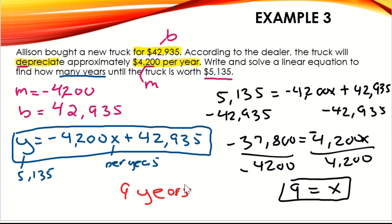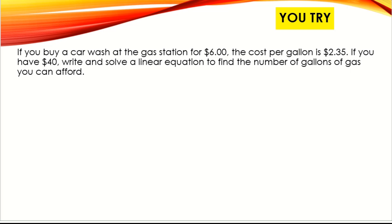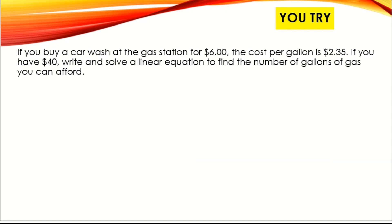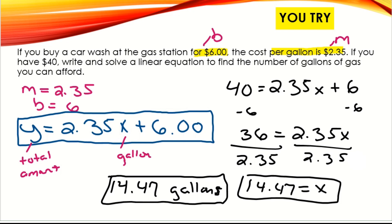Now try this problem on your own. If you buy a car wash at the gas station for $6, the cost per gallon is $2.35. If you have $40, write and solve a linear equation to find the number of gallons of gas you can afford. Pause the video and try it. The equation is y equals 2.35x plus 6, and the final answer is 14.47 gallons.